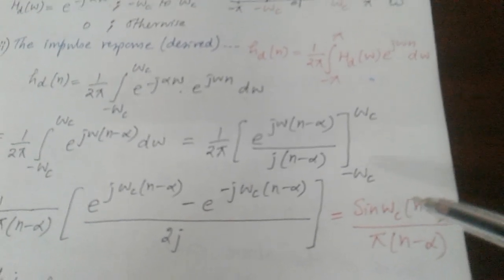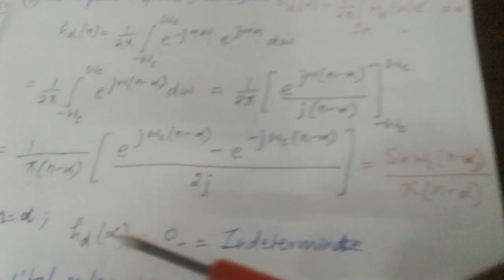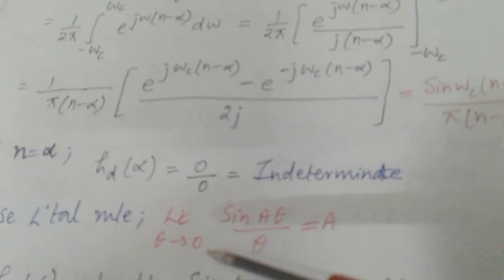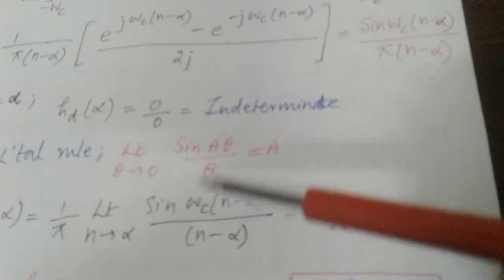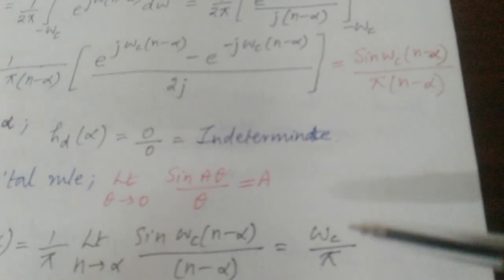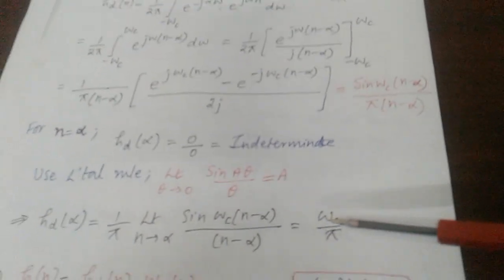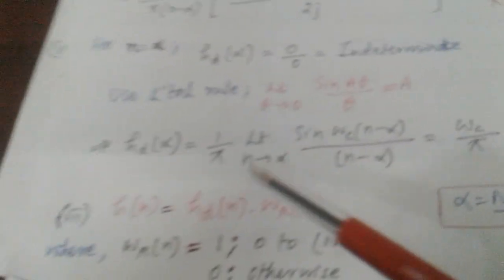Since h_D(n) is defined for minus infinity to plus infinity, we also need to find h_D(α), i.e., at n = α. Substituting n = α gives 0/0, so we use L'Hôpital's rule: limit as θ→0 of sin(aθ)/θ = a. Applying this gives h_D(α) = ωc/π. This is the standard answer for the low-pass filter case. Here α = 4, so h_D(4) = ωc/π = 1.2/π ≈ 0.382. Always show the steps — do not write the answer directly.